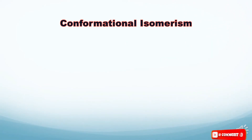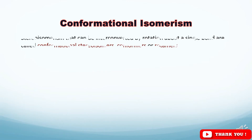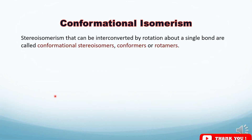Now I will talk about conformational isomerism. This is the second type of stereo isomerism. These are stereo isomers that can be interconverted by rotation about a single bond, and they are called conformers.